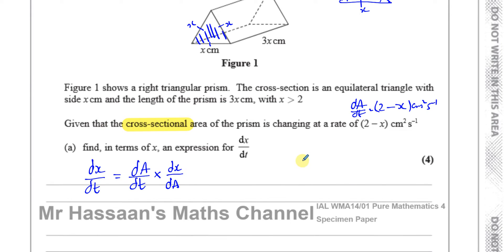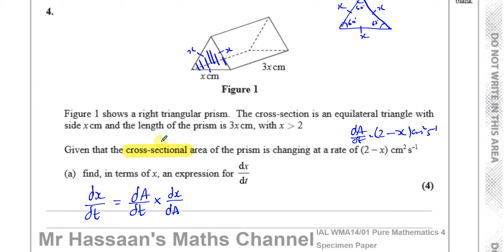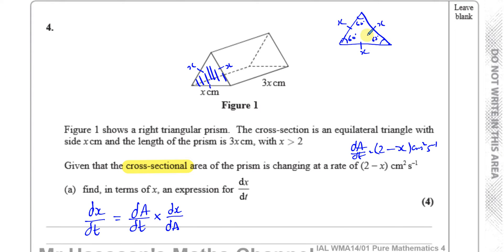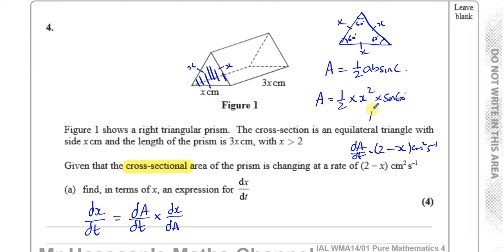I need A as a function of x. The cross-sectional area is the area of the equilateral triangle. Using the formula: area equals one-half times a times b times sine C, the cross-sectional area is one-half times x times x times sine 60, and sine 60 is root 3 over 2. So the cross-sectional area is one-half times x-squared times root 3 over 2, which gives A equals root 3 over 4 times x-squared.